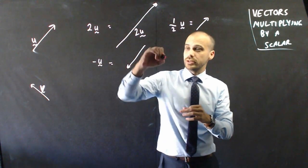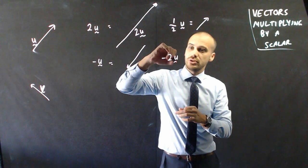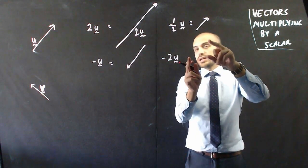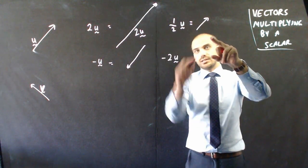And now to combine those, if I wanted to do negative 2u, same direction, but backwards, and then twice the length.